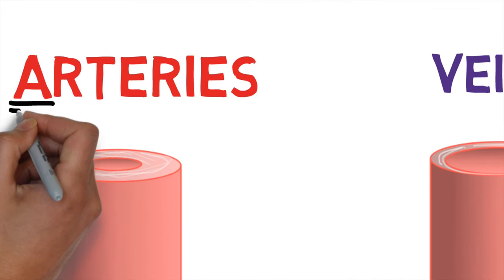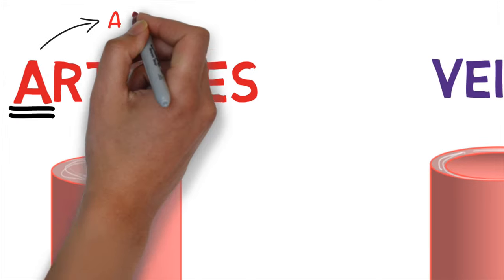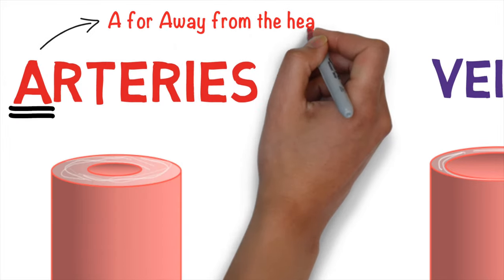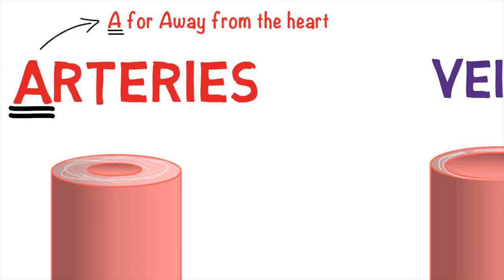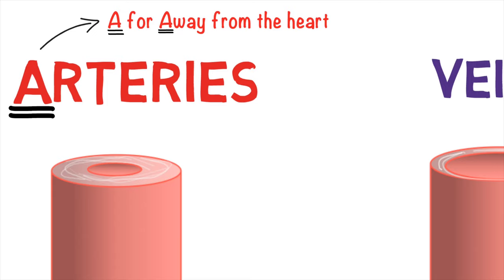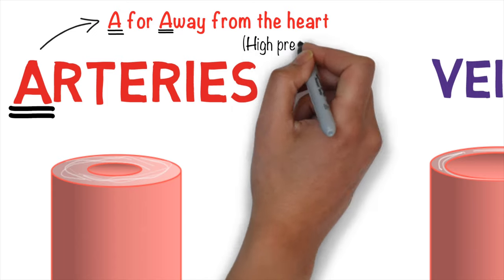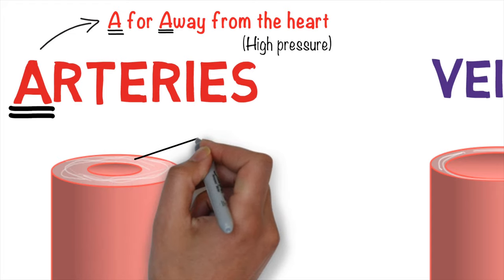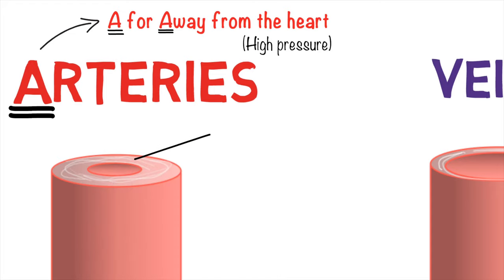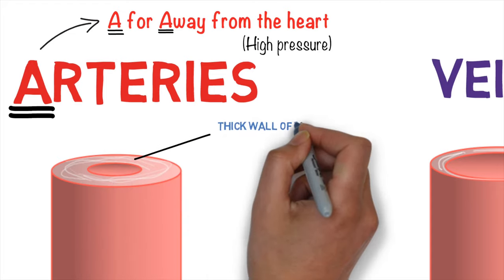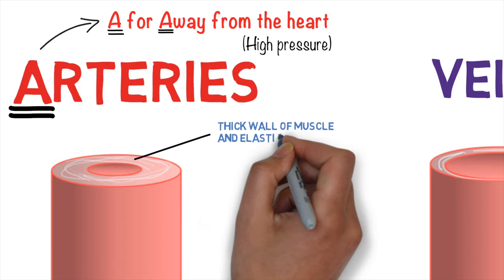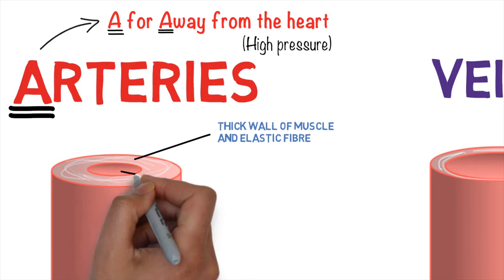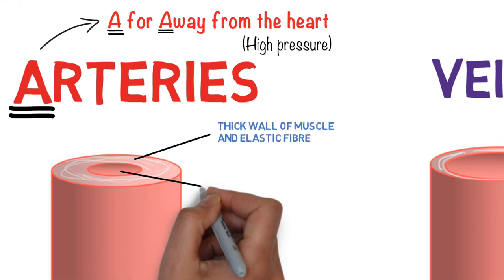A little exam tip for you. Arteries begin with the letter A. A for away. So arteries take blood away from the heart. So they take the blood away from the heart, and this blood is under very high pressure, because it's right next to the heart. And the way they're adapted to do this is they have this thick muscular wall and elastic fibres, which make up the main part of the artery.